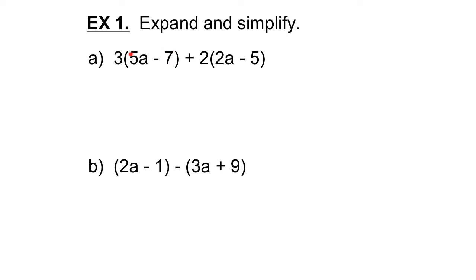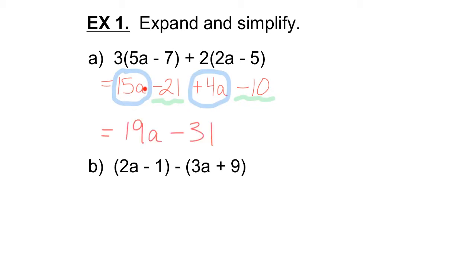When you have brackets, to expand the brackets, you multiply each term inside the brackets by the number in front of the brackets. So 5a is multiplied by 3, and minus 7 is multiplied by 3. We do the same thing over here: 2a is multiplied by positive 2, minus 5 is multiplied by positive 2. Now if we have like terms, we have to combine them. So 15a plus 4a is 19a, minus 21 minus 10. Think of your thermometer — you're starting negative and getting more negative, so we're down to minus 31. This expression simplifies to 19a minus 31.